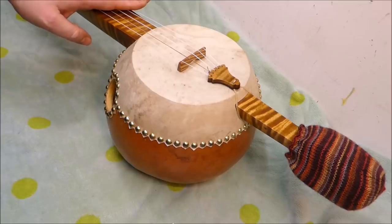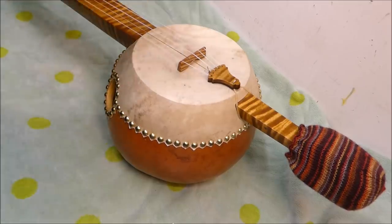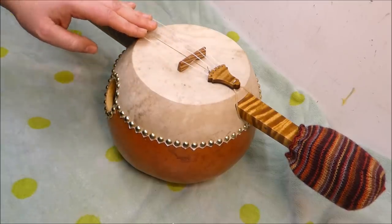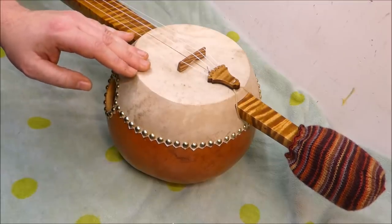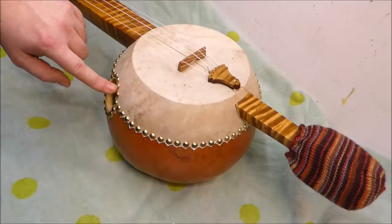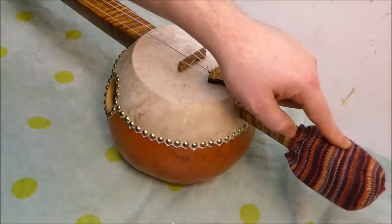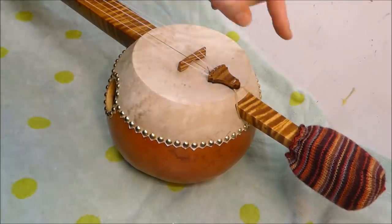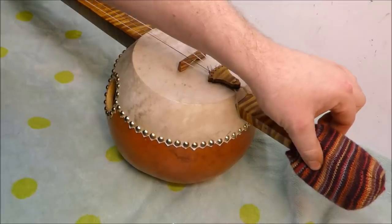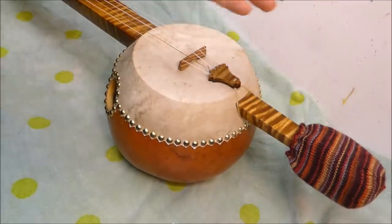It developed and morphed and became the classic American banjo we all know. So this one here is nylon strung, originally it would have been gut. Obviously the head is made from goat skin and it's been tacked to the gourd. This little thing at the end here, the owner is a textile artist and he carries this in a standard banjo gig bag. He put that on there to act as a cushion. I think visually it's a good addition, I like it, it fits.